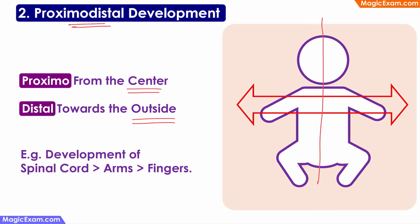For example, the spine is one of the first organs to develop, and the development of the arms and the legs happens after the spine has been developed to a certain extent. So development starts from the center. The spinal cord has to develop first for the baby to be able to control the arms and legs.